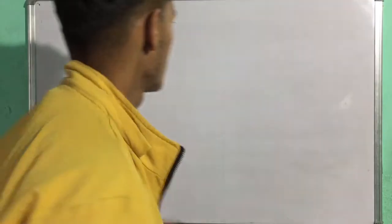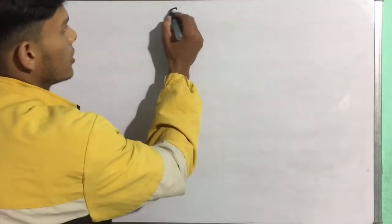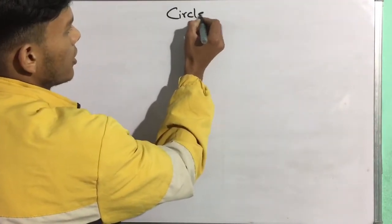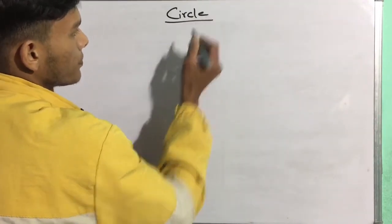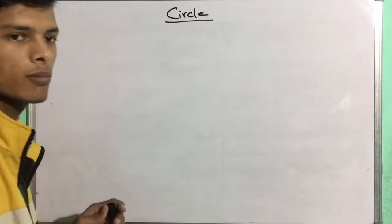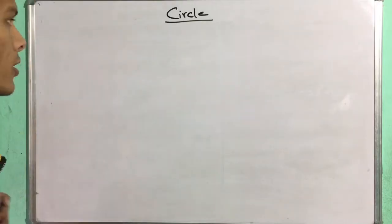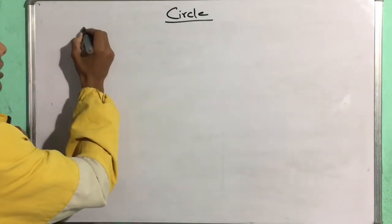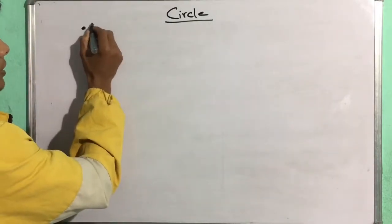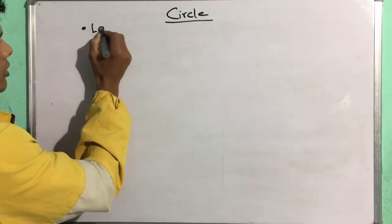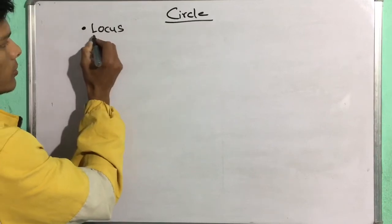Then I will start the pairs of lines. Then I will start the circle. So, I will start the circle. Why do I start the circle? Let me first tell about the circle. I will start the circle from the first place. This is a locus point.